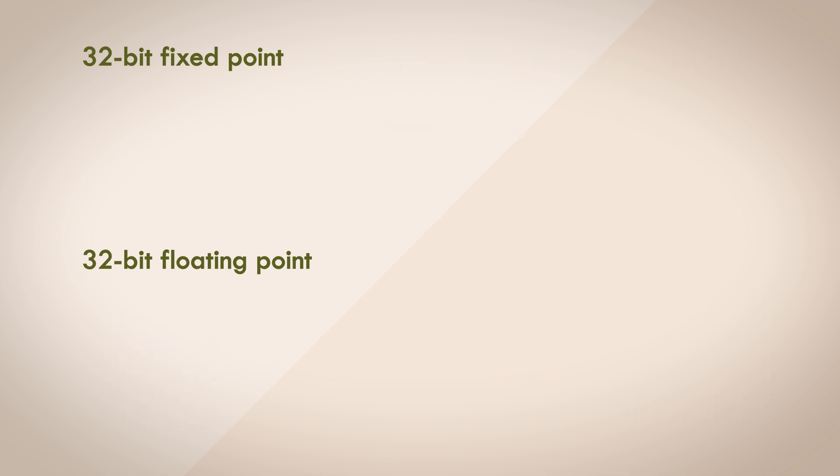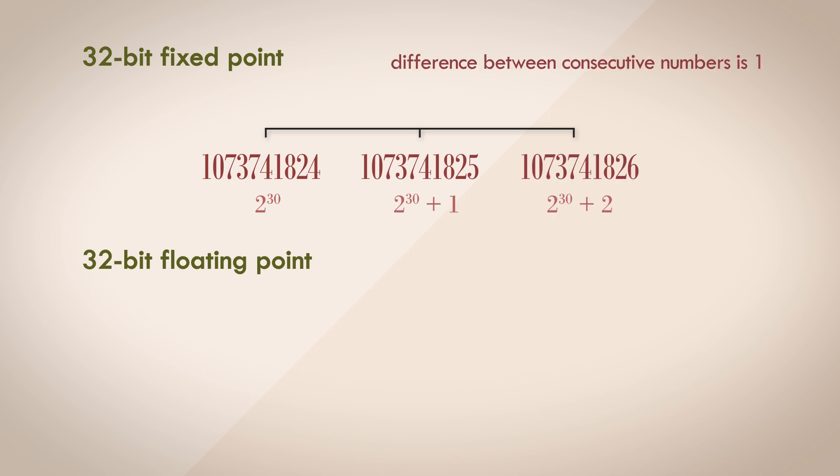Let's look at a bigger number. This one. This is 2 to the power of 30 by the way, and this can be represented in the 32 bit fixed point format. What's the next representable value in fixed point? Well, you've heard it before. The difference between the consecutive numbers is always 1. In fixed point, the next number is this.